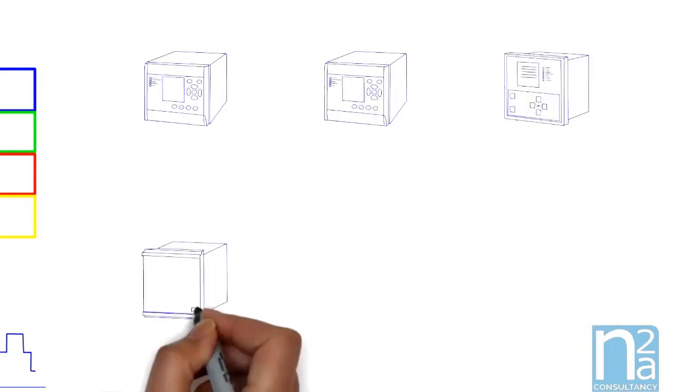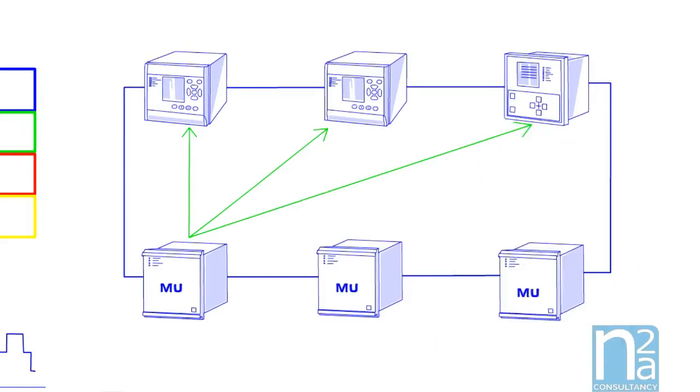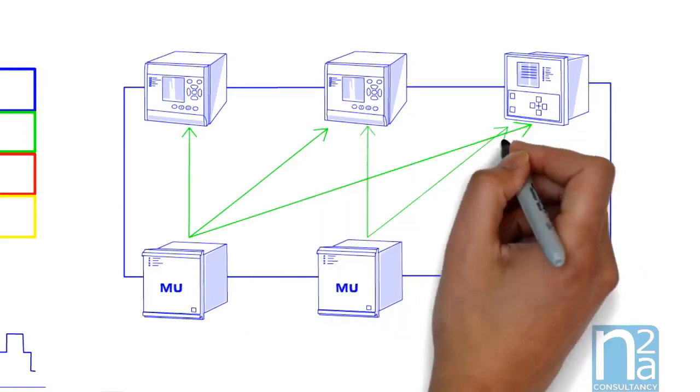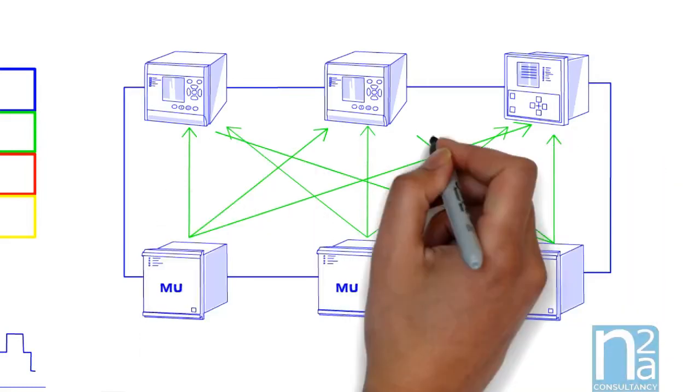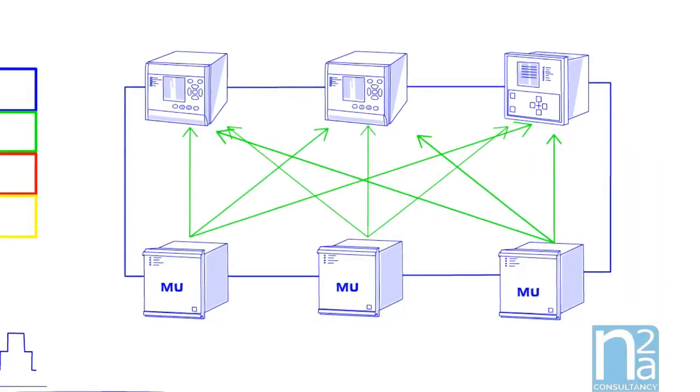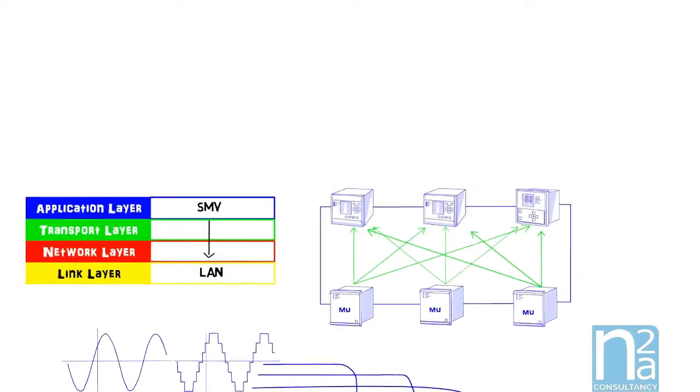This voltage and current measurement could be used by any IEDs which need the information, and this without additional wiring, just by using the process bus which needs to have sufficient bandwidth to support this large flow of information. In medium voltage applications, because of physical proximity between the relay and the switchgear, it is not much used today. But the possibility to share values of voltage and current and the absence of copper wires in the medium voltage compartment could be an advantage.